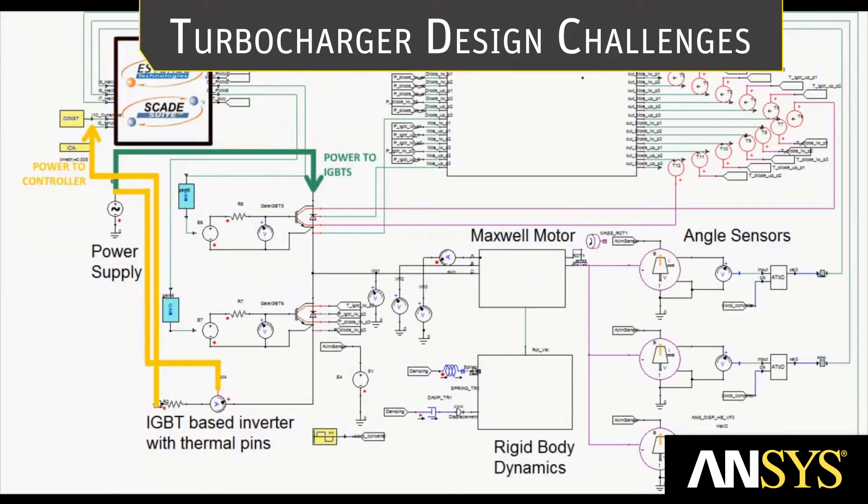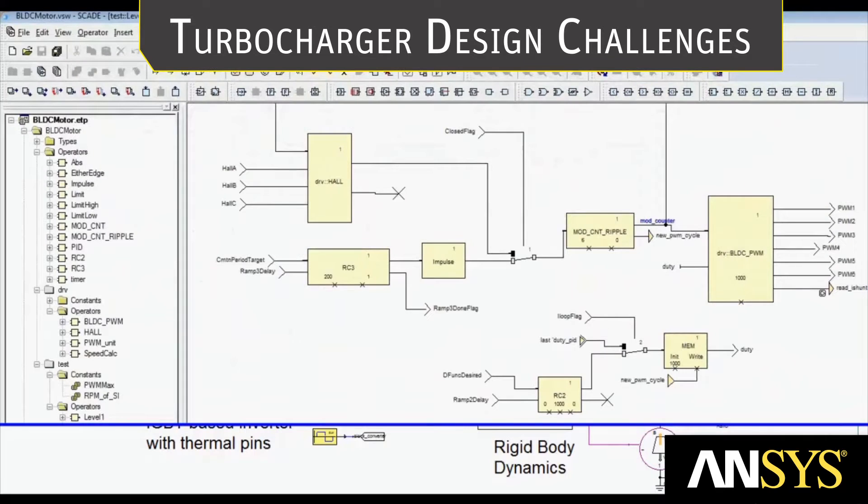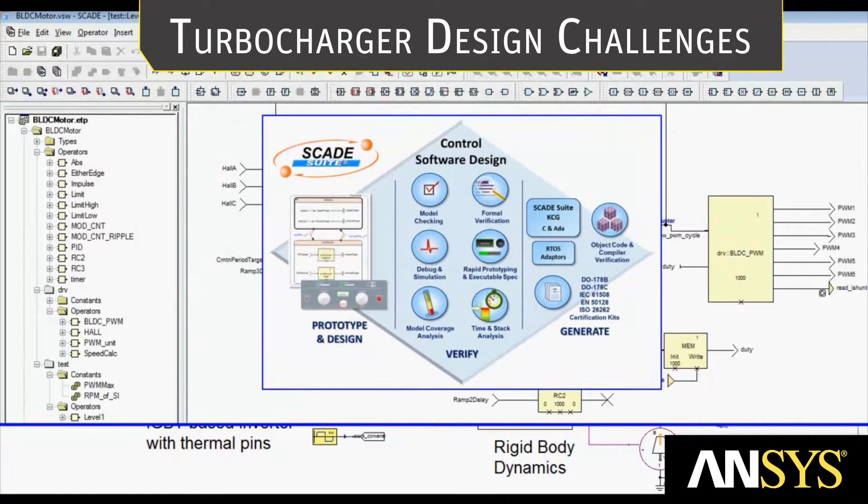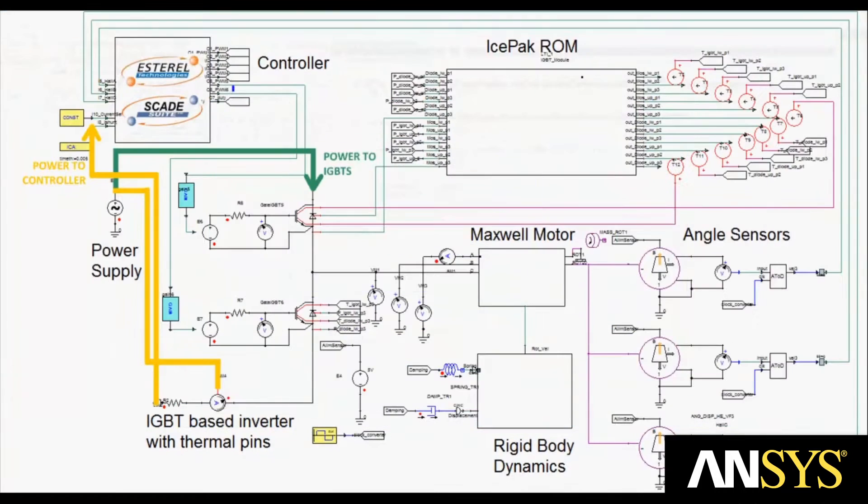The variable speed motor is controlled by an electric drive, in this case utilizing a controller with embedded code generated by ANSYS Estoril SkateSuite. Simplora uses the embedded code to produce a pulse-width modulated signal to control the motor speed.